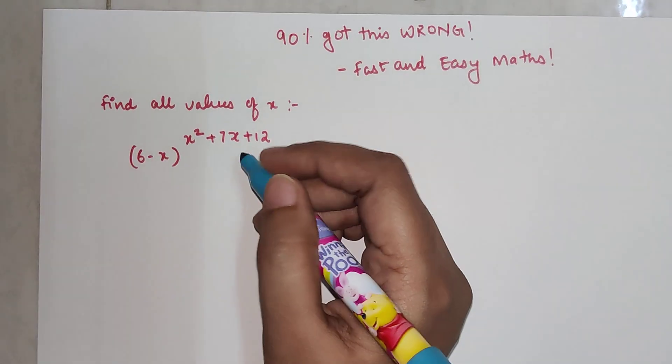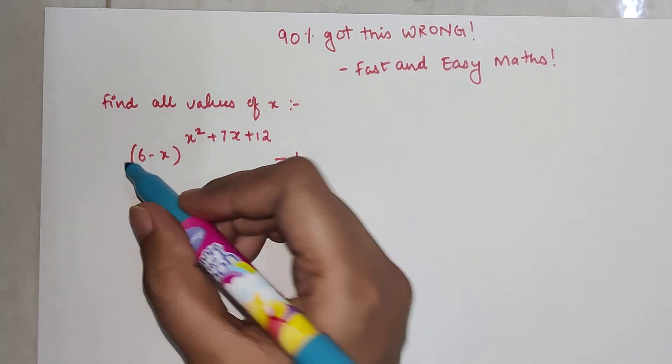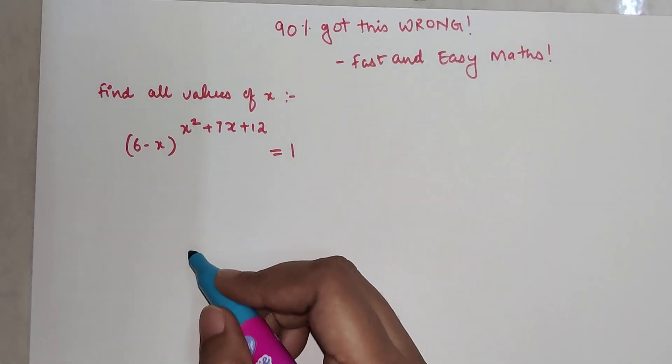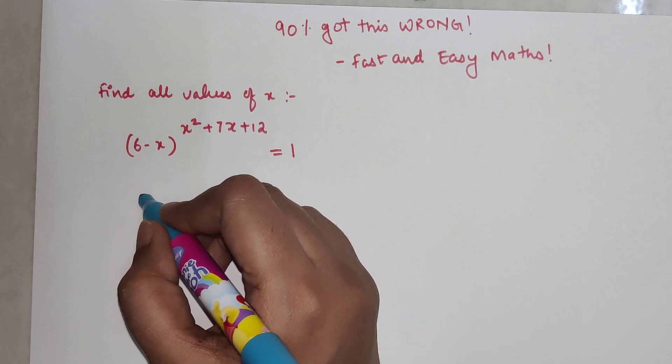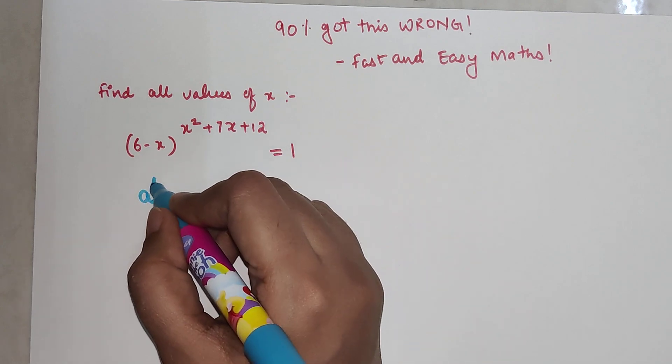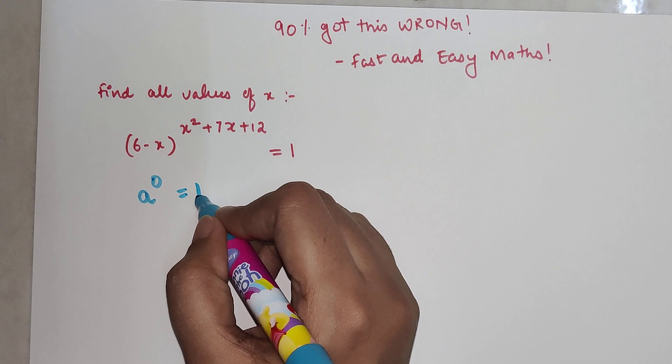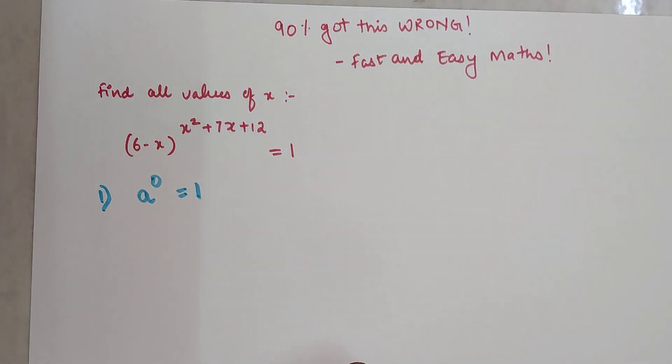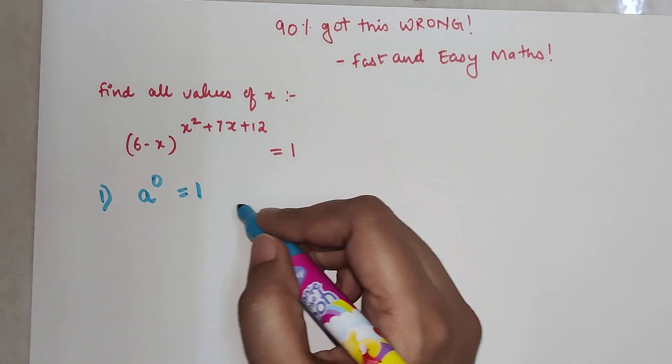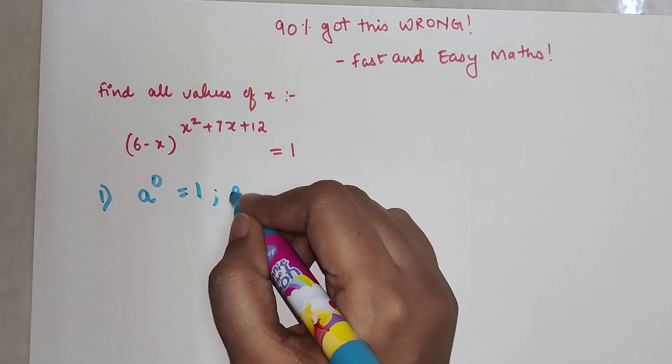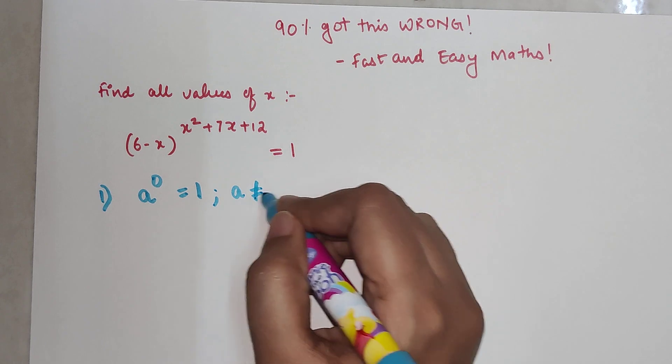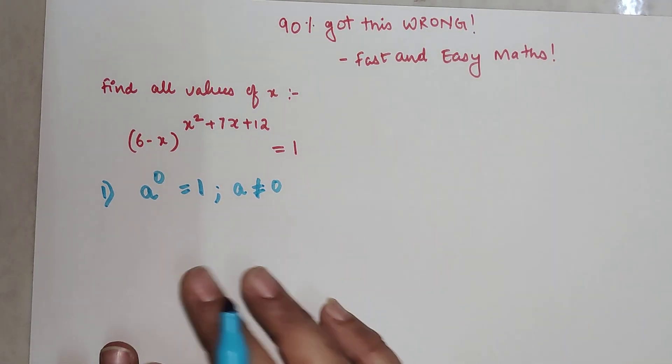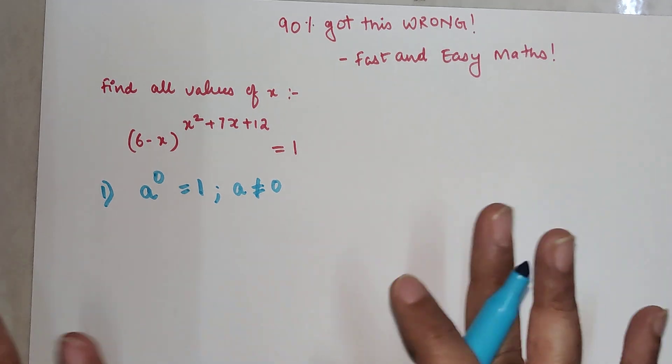In this one, please understand you have to use your basic knowledge of indices. See, when any number is raised to zero, that is one scenario where you get one. So this is your first scenario. But in this case you just have to make sure that a is not equal to zero. If a equals zero, then you get zero raised to zero, that cannot equal one.